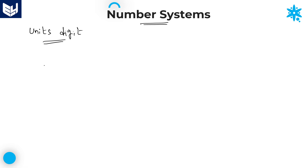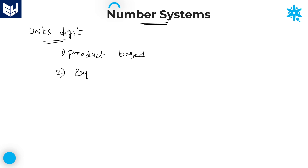First of all, how to calculate the units digit of any number? Basically, we have two types of units place digit calculation. One is product based, and the second one is exponential based.